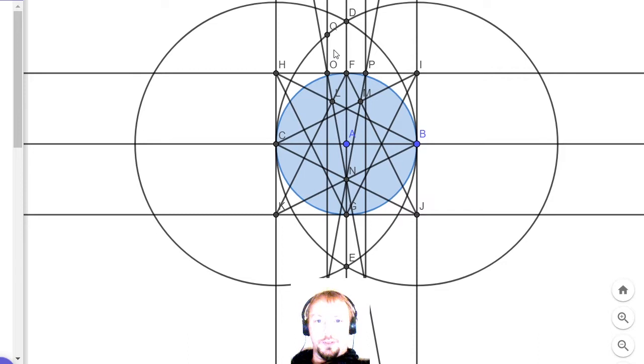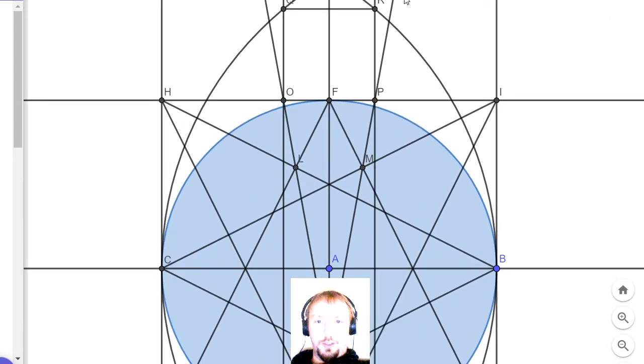And then we create two points here and here where those new vertical lines intersect with these larger circles. And we draw a line across between Q and R. So that gives us a square.